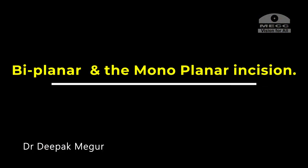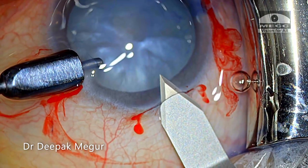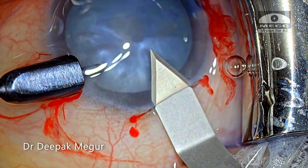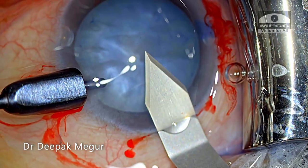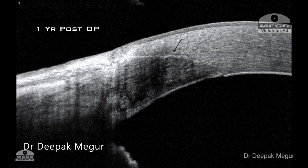We do have other variants — the biplanar and the monoplanar incisions. In the biplanar incision, the initial groove is present and the blade traverses obliquely creating the tunnel, then enters the anterior chamber directly. Examining this through the OCT: there is the initial plane of vertical incision, and then a straight line traverses across the corneal stroma without changing direction before entering the anterior chamber.